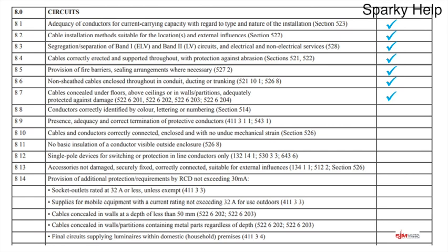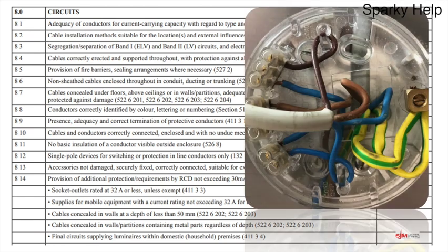Conductors correctly identified by colour, lettering, or number. On this three-plate ceiling rose we can see neutrals on the bottom, the earths, and the loops in the middle which is the three-plate part. But we can see another blue which would be the switch line going to the brown of the flex, and it has no sleeving on — so that would be a fail. Likewise for two-way switching using three core and earth, the black and grey cores need to be sleeved brown, and for three phase all the same-colour conductors need to be labelled L1, L2, and L3.